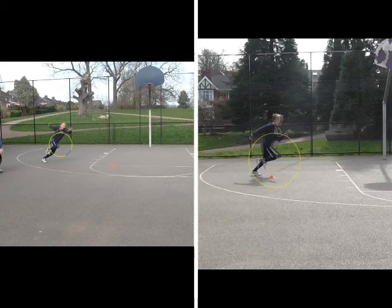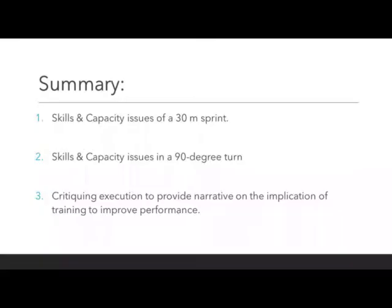An improvement was probably slightly easier with this athlete, as he had little coaching experience and those two technical flaws didn't seem too deep rooted. In summary, we identified and discussed the skill and capacity issue over a 30m sprint. We also analysed a complex skill from an in-game situation to identify a common fault to evaluate, providing insight throughout the vlog into how we then changed training or implemented intervention to suit the needs of the athlete. Thank you for listening.